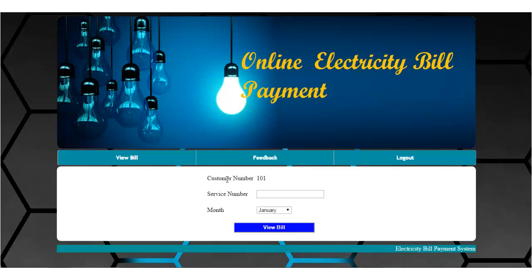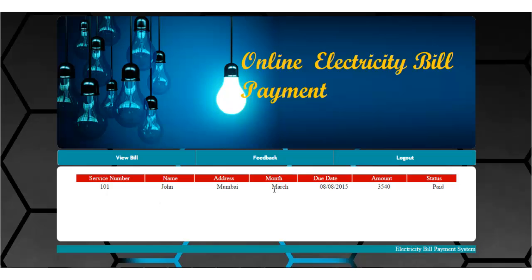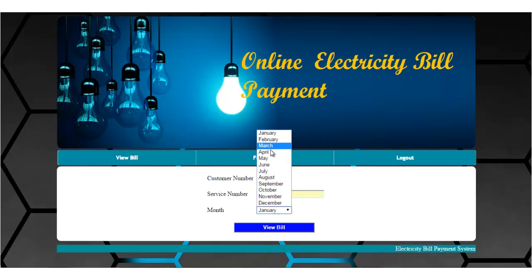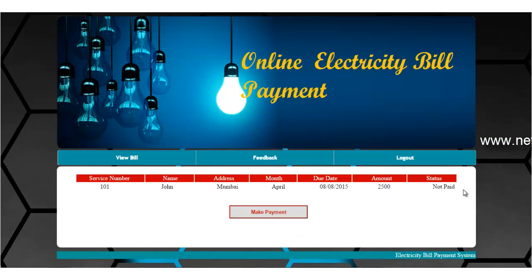The first option is view bill. The customer number is fetched directly from the database as soon as the customer logs in. Enter the service number and select the month — for example, March. All details are shown: the service number, name of the user, address, month, due date, bill amount, and the payment status. For April, selecting the month and clicking view bill shows the status as not paid.